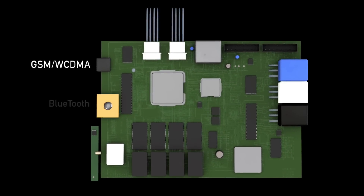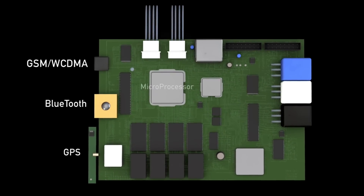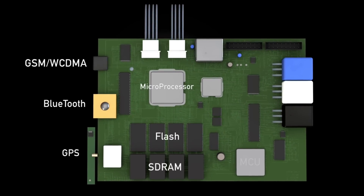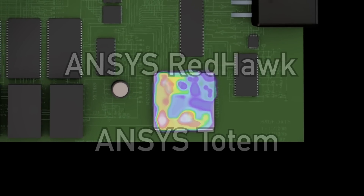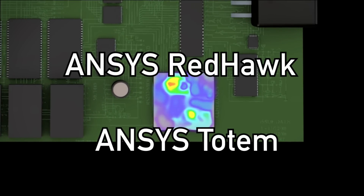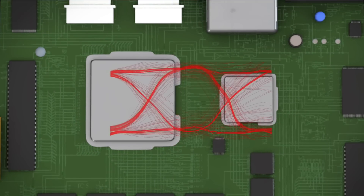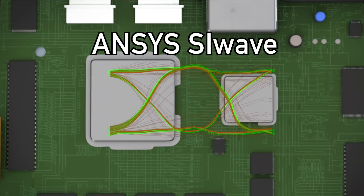Every electronic system contains various components that must not only function properly on their own, but also in the context of the entire system. ANSYS products ensure that these components are validated for power, signal, and thermal integrity.